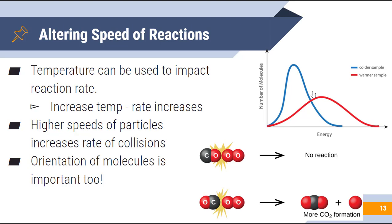How do we alter the speed of chemical reactions? One way is temperature. If we increase the temperature, the molecules are moving faster, so more collisions take place, which increases the rate of the reaction. Temperature is a measure of average kinetic energy, so some molecules will inherently be faster and some slower. Orientation of molecules is also important — if molecules are not oriented the proper way, then a reaction is not going to take place. For example, combining carbon monoxide and oxygen: if the molecules combine in a way that isn't favorable energetically or doesn't allow bonds to be broken or formed, then the reaction will not take place.